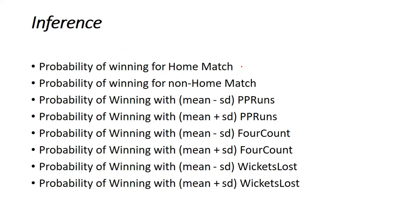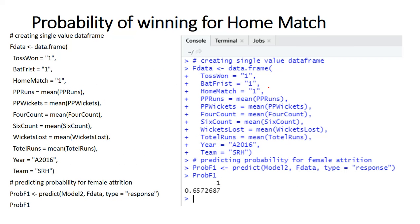For inference, I can predict the probability of winning a home match versus a non-home match. Using the data.frame command in R with Sunrisers Hyderabad data for 2016, I predict the probability of winning a home match. The final predicted probability value is 0.6572687 for SRH home matches. You can change the year and team to get different probability predictions for any team in the dataset.